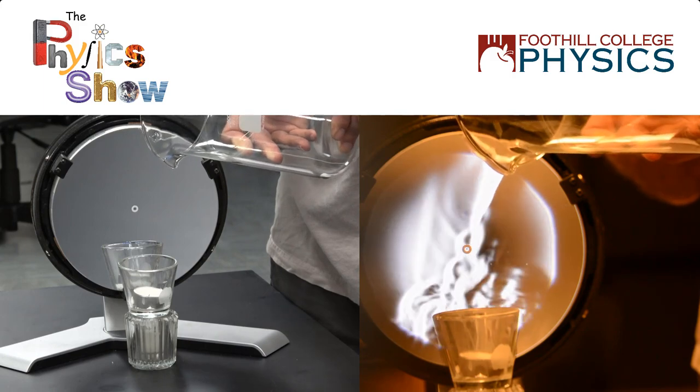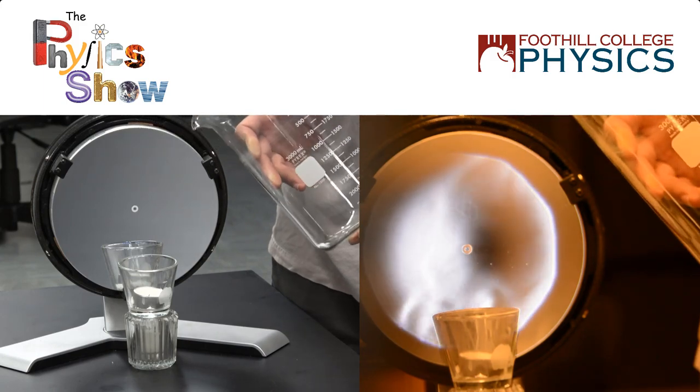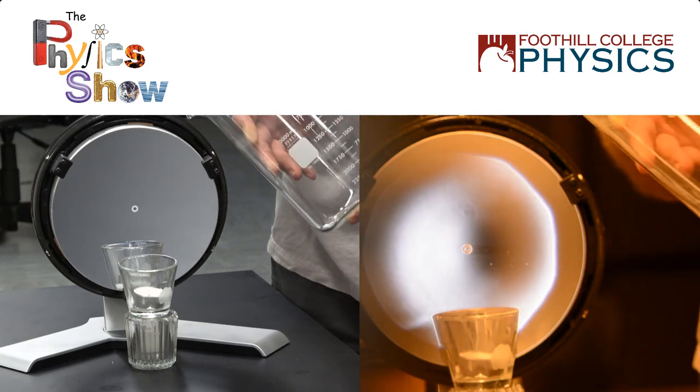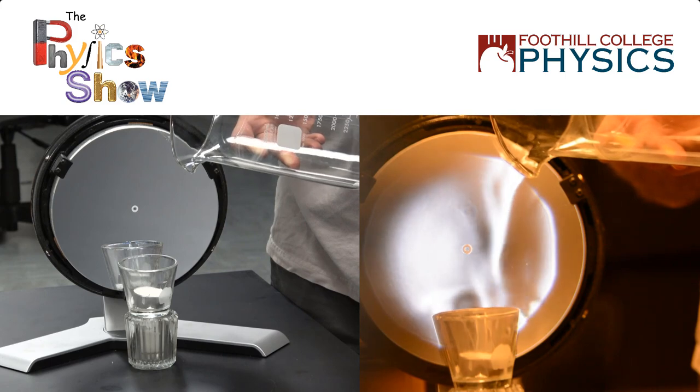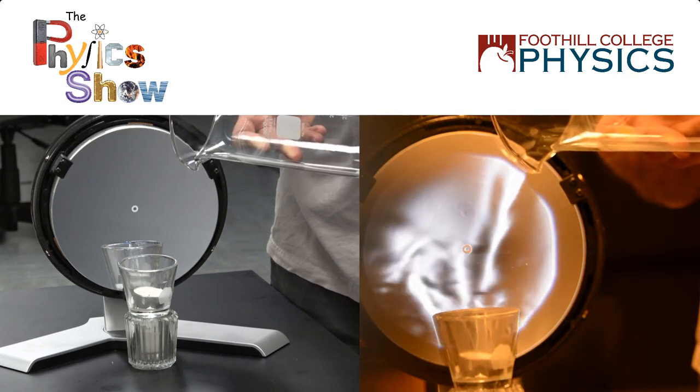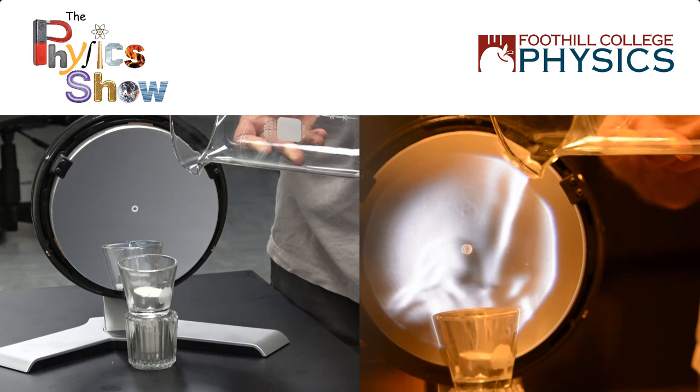There's CO2 gas, carbon dioxide gas, in the beaker. Carbon dioxide is more dense than air, so it flows out of the beaker and down. And you can see it using the Schlieren technique in the video on the right.